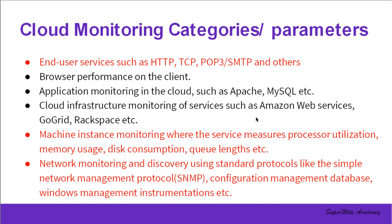Since monitoring of resources is an extremely important feature for cloud — where almost everything is provided as a service — resources are categorized into six types based on the nature of service they provide. Number one: end-user services such as HTTP, TCP, POP3, SMTP, and other protocol-based services. Number two: browser performance on the client side, which allows cloud service providers to optimize their services.